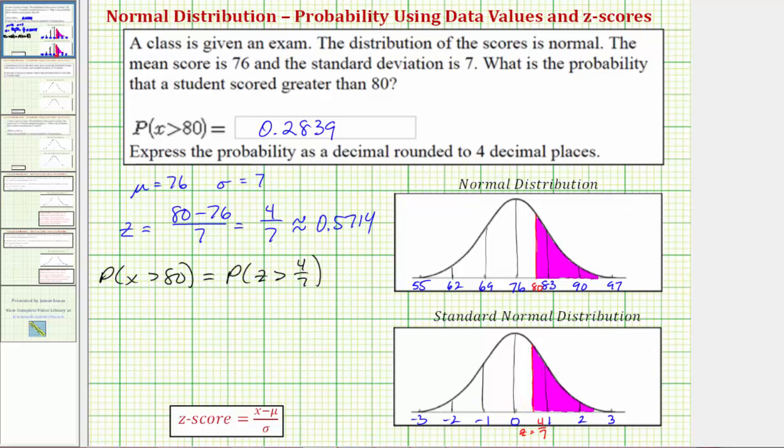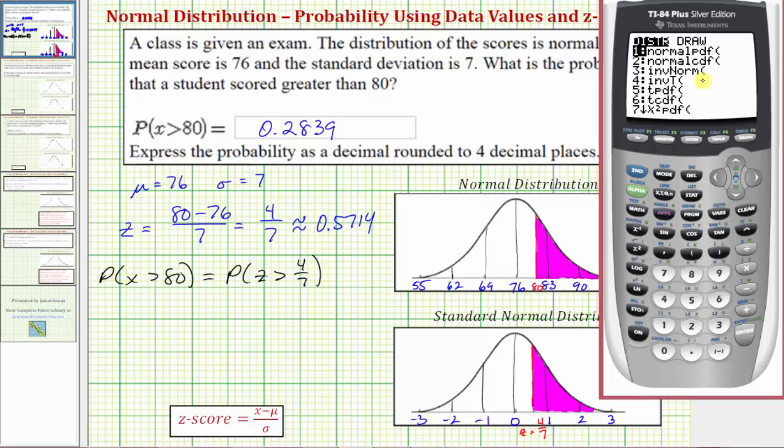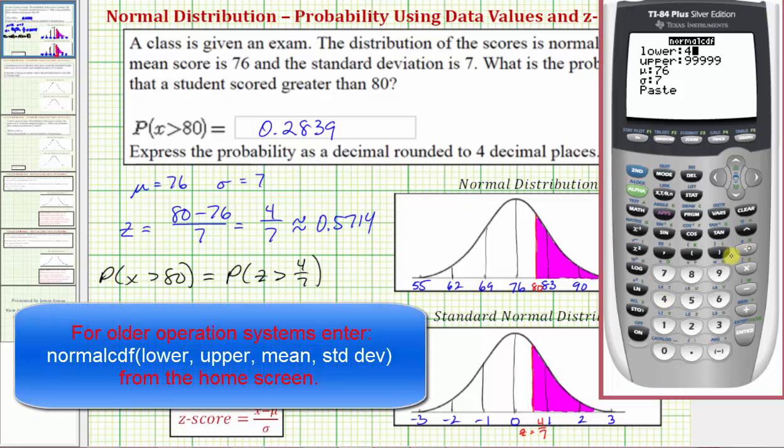So now going back to the calculator, we'll press second VARS for distribution again. Option two for normal CDF. Now our lower bound is going to be the z-score of four-sevenths. Enter.